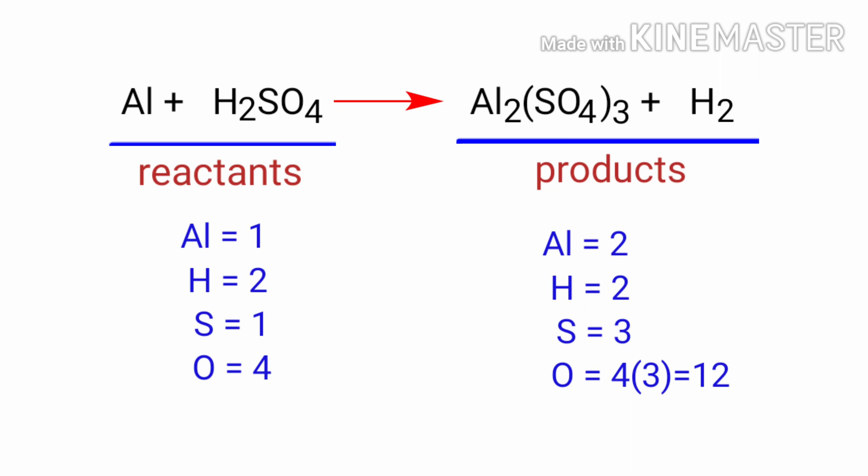In this equation, we need to balance the Sulphur atoms first. To do this, we need to put a coefficient of 3 in front of H2SO4. The Sulphur atoms are balanced.